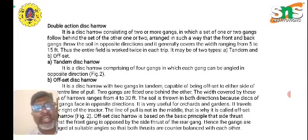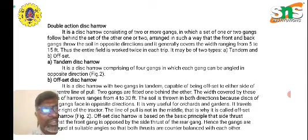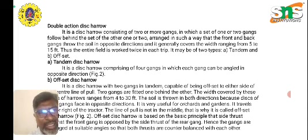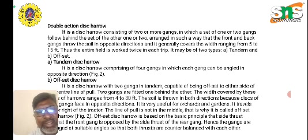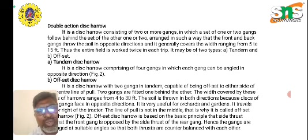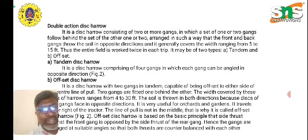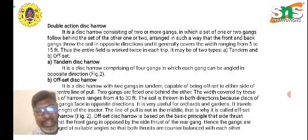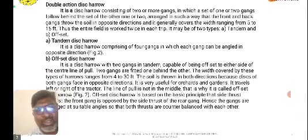The double action disc harrow consists of two or more gangs in which a set of one or more gangs follows behind the set of the other. The front and back gangs throw soil in opposite directions and generally cover a field width ranging from 5 to 15 feet. Thus the entire field is worked twice in each strip. It may be of two types: tandem type or offset type.